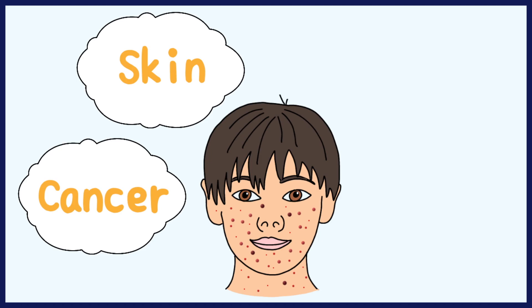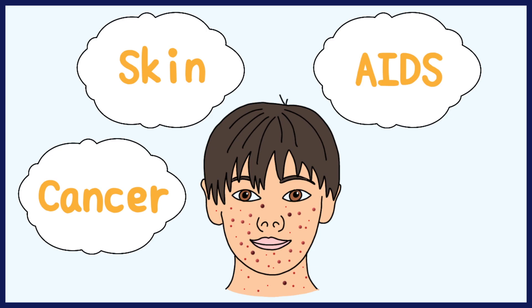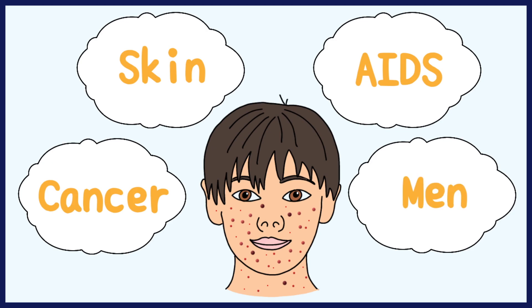Most of the time, it is found in AIDS patients or those with suppressed immune systems. Many healthy individuals carry the virus but they don't suffer from the disease. It shows a clear preference for males and is seen eight times more commonly in men than in women.